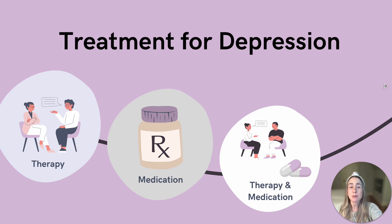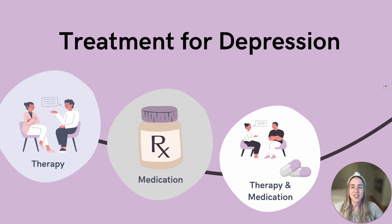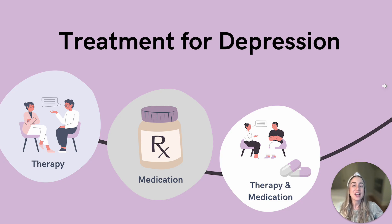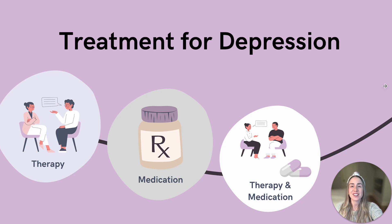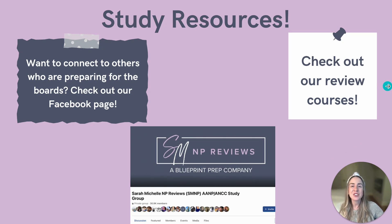Once the diagnosis of depression is made, you'll want to discuss treatment options. Generally speaking, treatment should include psychotherapy and medication. For mild or moderate cases of depression, psychotherapy alone can be a good treatment option. For more severe cases, medication is often necessary. Selective serotonin reuptake inhibitors, or SSRIs, are typically our go-to medications. Combined psychotherapy and medications have been shown to be the most effective treatment for severe depression.